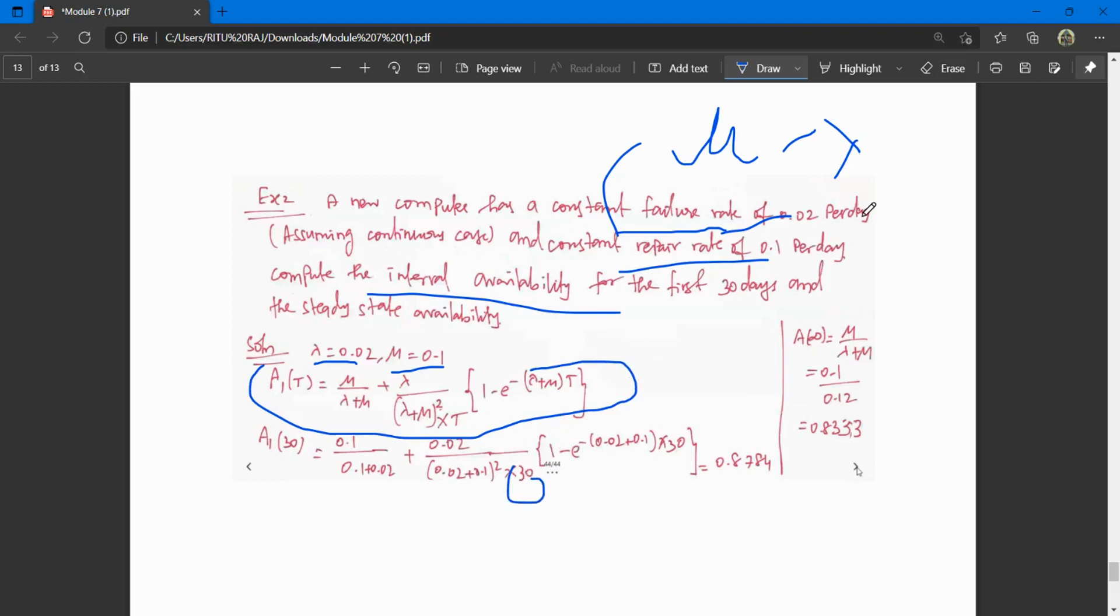We replace t by 30 and put lambda and nu from the question. You'll get interval availability as 0.8784. For steady state availability, the formula is nu by (lambda + nu). Put the values and you get 8.333.